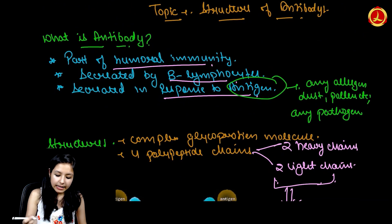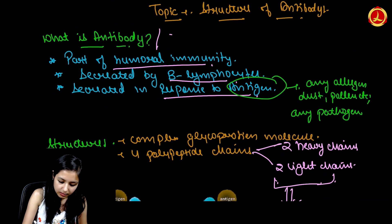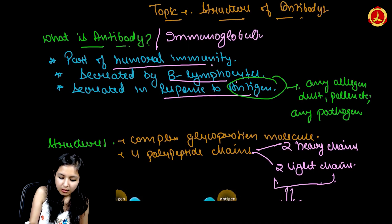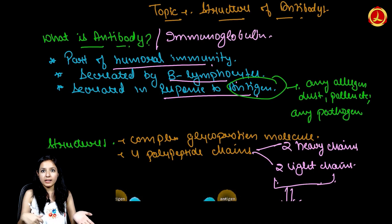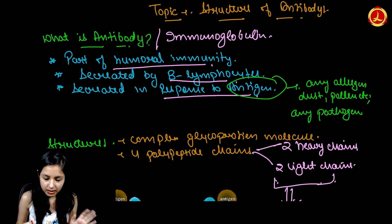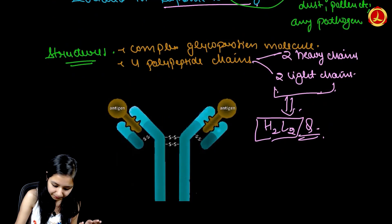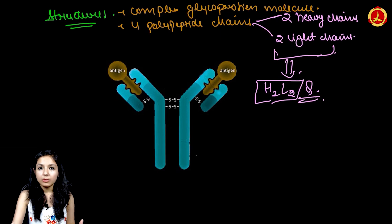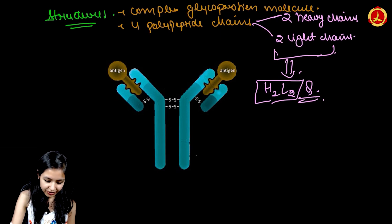An antibody is also known as immunoglobulin. So when we say antibody or when we say immunoglobulin, it is the same thing. Now, there are two heavy chains and two light chains.